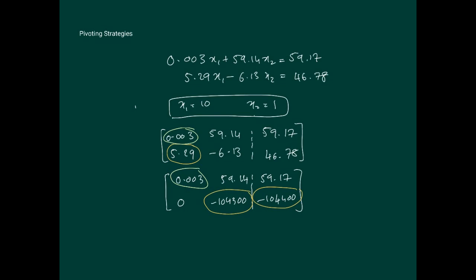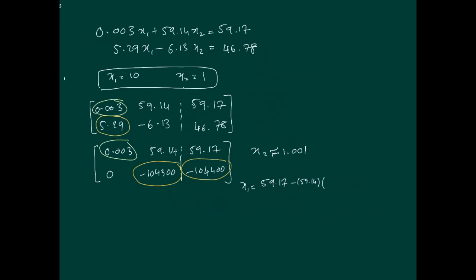If we proceed further, when we back substitute, x2 will work out to be approximately 1.001, which is not too bad considering that x2 is exactly 1. However, as we proceed further to calculate x1, we find that x1 is going to be 59.17. Let me do this in detail: 59.14 times 1.001 divided by 0.003, and that becomes minus 10.